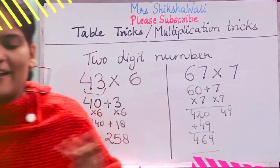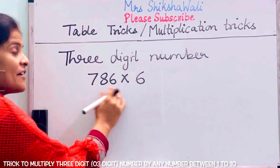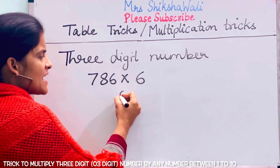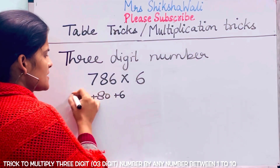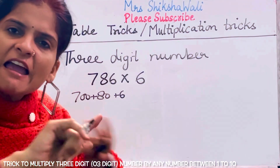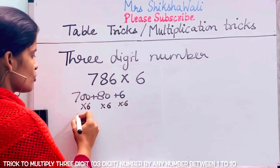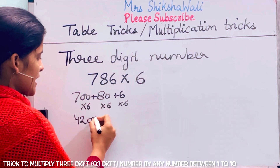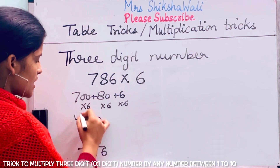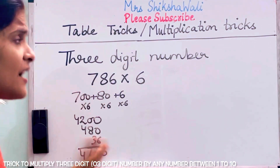Now let's see a three-digit number. Take 786 multiplied by 6. Expand it: 700 plus 80 plus 6. Then: 700 × 6 = 4200, 80 × 6 = 480, and 6 × 6 = 36. Add them together to get 4716. I hope you have understood how to do this.